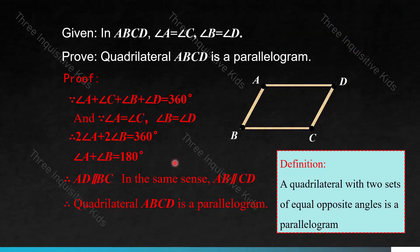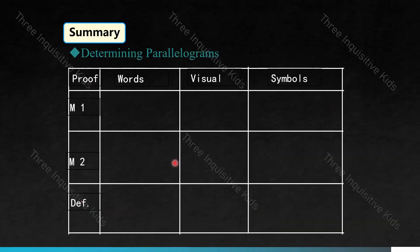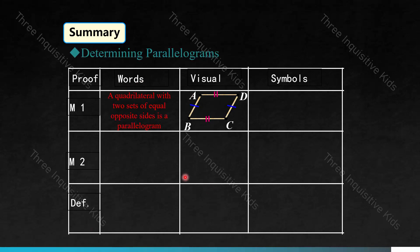To remind you of the definition: a quadrilateral with two sets of equal opposite angles is a parallelogram. Here is our final summary. If you're taking notes, this would be a good time to pause the video and create a table. In determining parallelograms, there are three methods you can use: method one, method two, and method three, which is according to the definition.